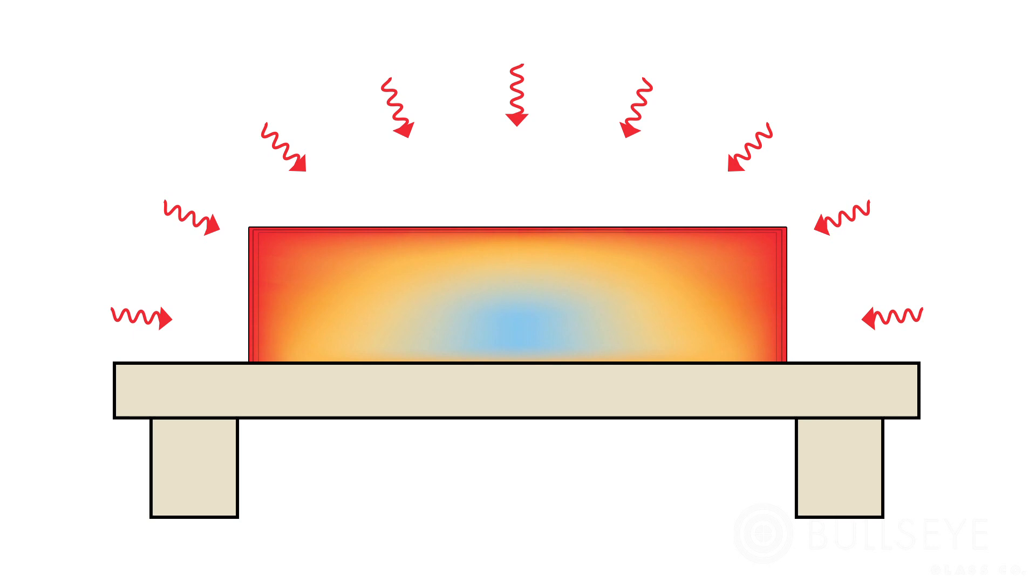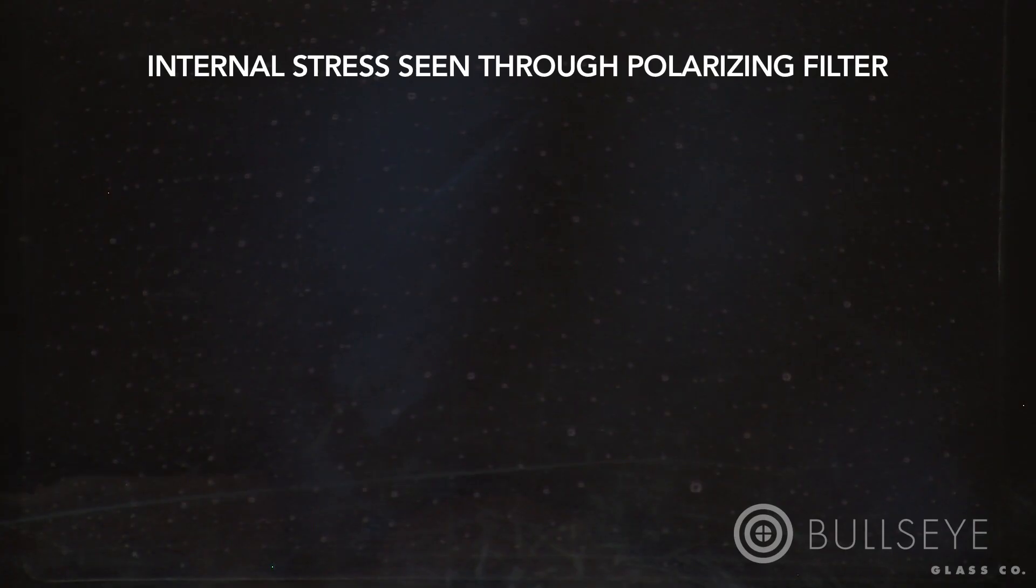Because glass is an excellent insulator, heating or cooling it too quickly results in uneven temperatures throughout the body of the piece. Uneven temperatures cause uneven expansion within the glass. This in turn leads to stress within the piece, seen here as light blooming across the surface.